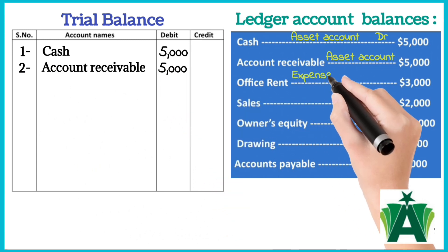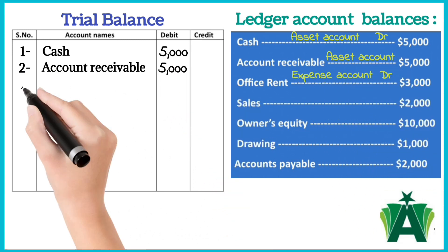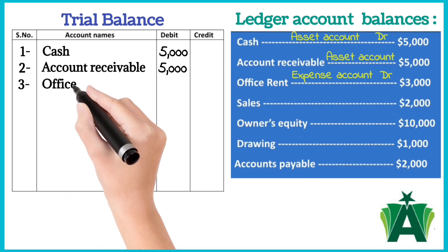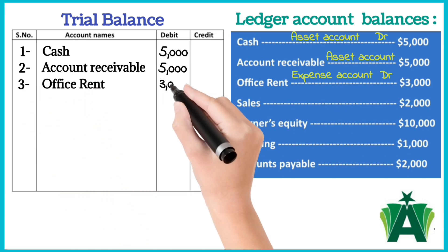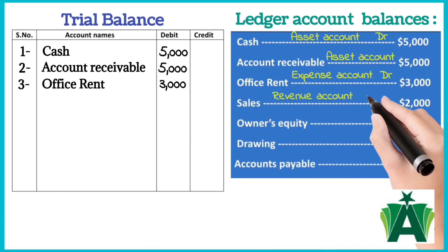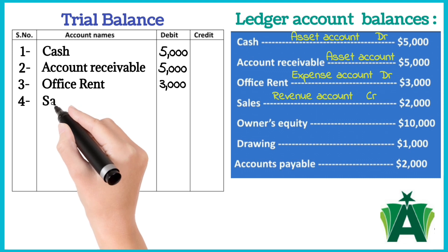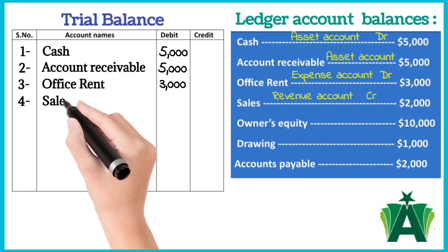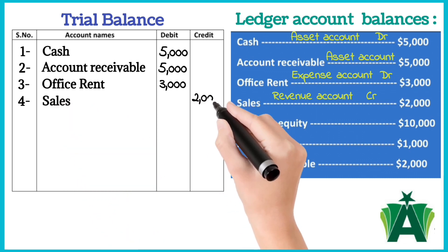Office rent is an expense account. The normal balance of an expense account is debit balance, so office rent is recorded in the debit column of a trial balance. Sales is a revenue account. The normal balance of a revenue account is credit balance, so it is recorded in the credit column of a trial balance.